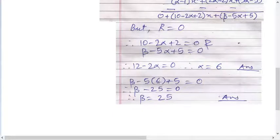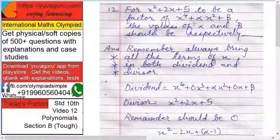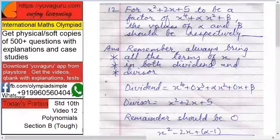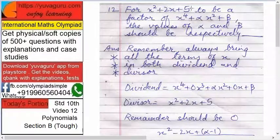For beta now: beta minus 5 alpha, but alpha we know as 6, so beta minus 5 into 6 plus 5 equals to 0. So it becomes beta minus 25 equals to 0, beta equals to 25. So these are the two answers: alpha should be 6 and beta should be 25. Then only this x squared plus 2x plus 5 will be a factor of x raised to 4 plus alpha x squared plus beta.